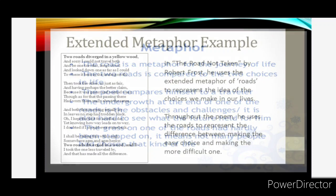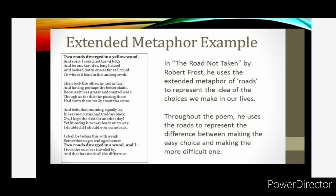The poet has also used extended metaphor in the poem. He uses the extended metaphor of roads to represent the idea of the choices we make in our lives. Throughout the poem, he uses the roads to represent the difference between making the easy choice and making the more difficult one. And we know that he was in a dilemma — he was perplexed, he was not able to decide. So that is why he stood there analyzing both the roads for a longer period of time, and later he obviously had to decide, so he chose one road and started walking on that path.